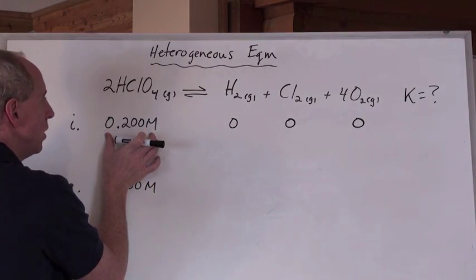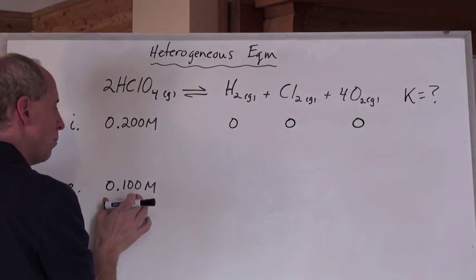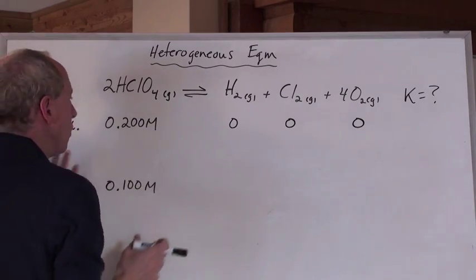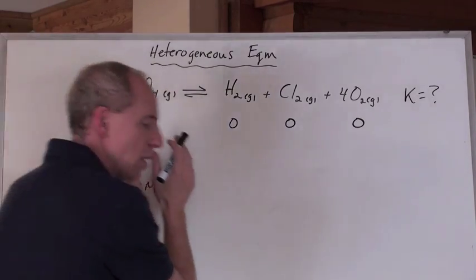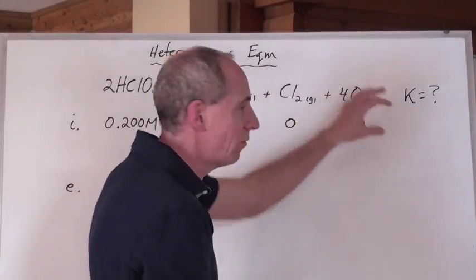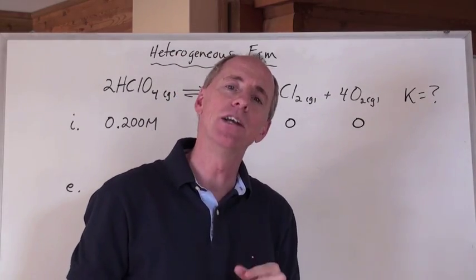Well, we initially had 0.2, and nothing here, but we end up with 0.1 here. And we know that the reaction must actually move toward making some of these chemicals. And so now, here's what you do.